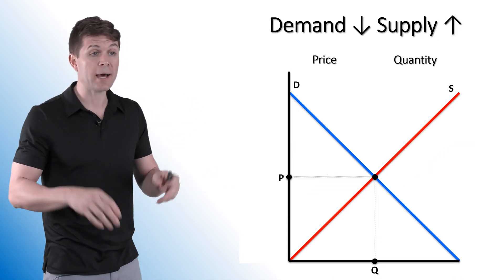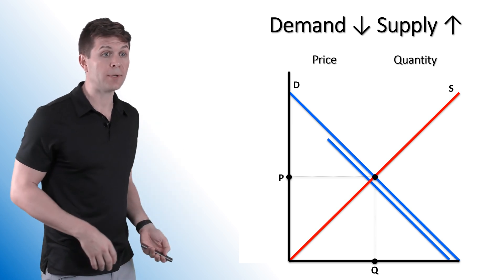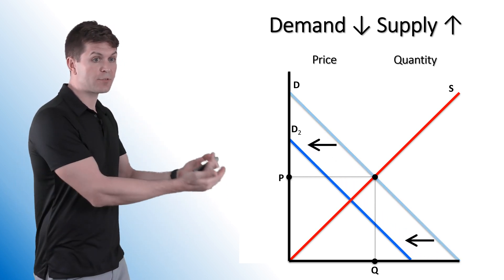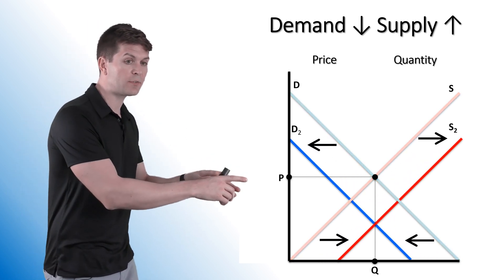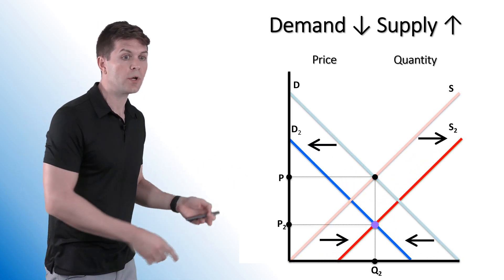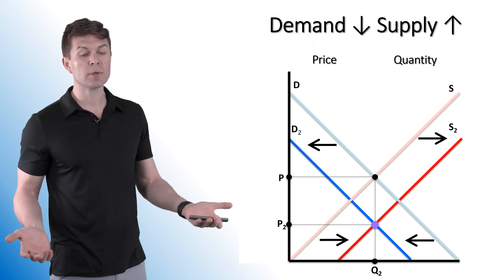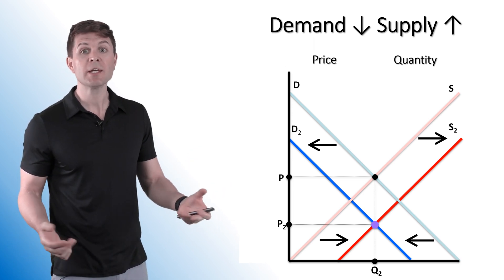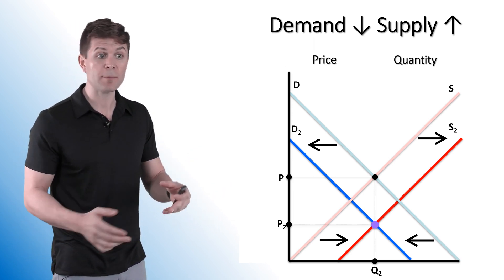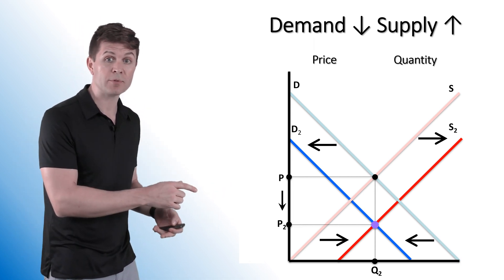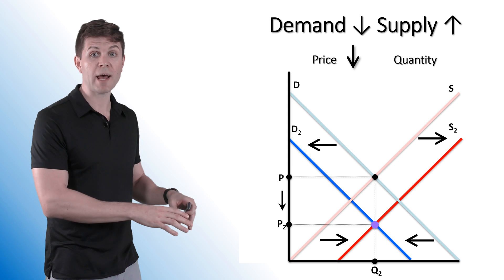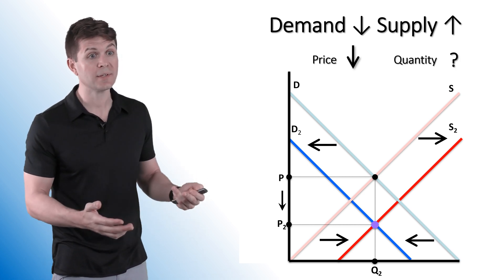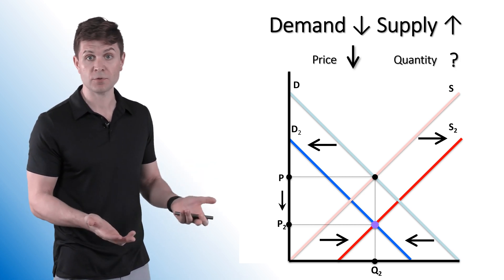Last model: demand down, supply up. Left-shifting demand curve, right-shifting supply curve — we have our new equilibrium established. In this particular example, we know what happens to price: it's going to go down. And quantity is going to be indeterminate.